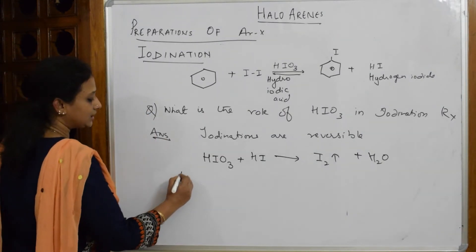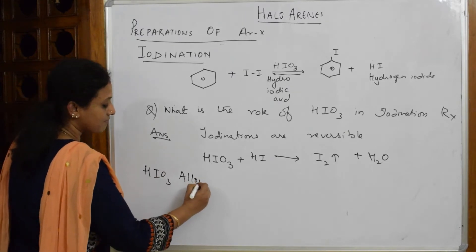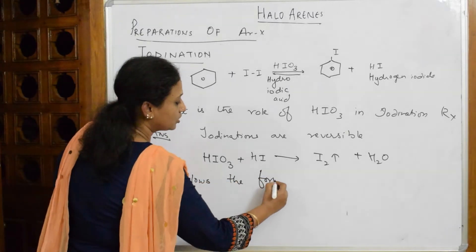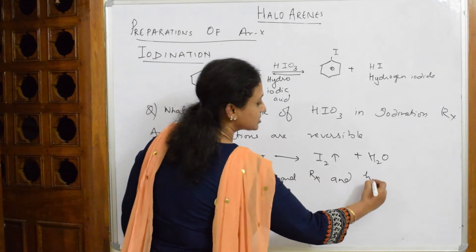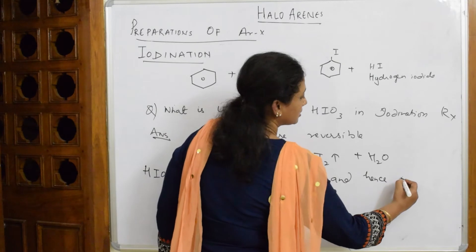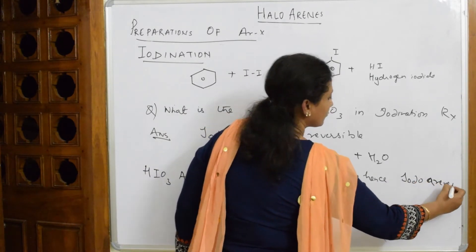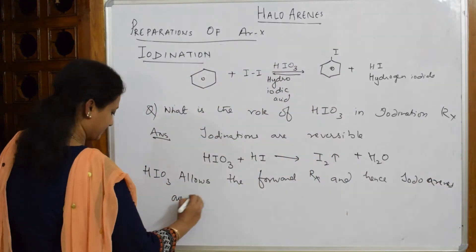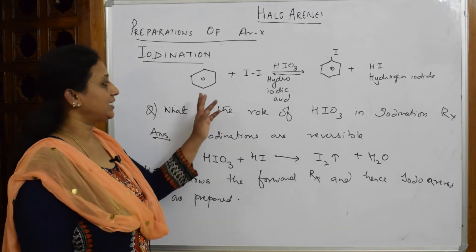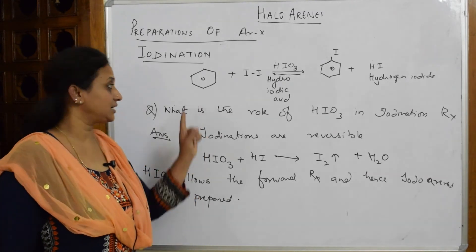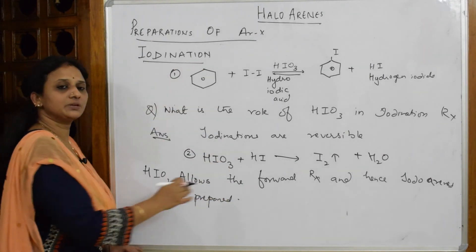So the answer to the question — what is the role of HIO₃ in iodination? — is that HIO₃ allows the forward reaction to proceed by removing HI, thus ensuring iodobenzene is prepared. Additionally, iodination does not occur in a single step; it occurs in two steps. Make sure your answer is complete.